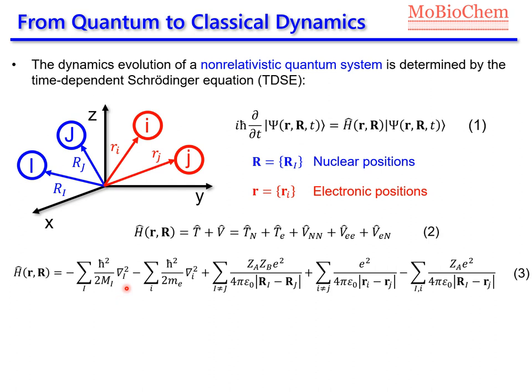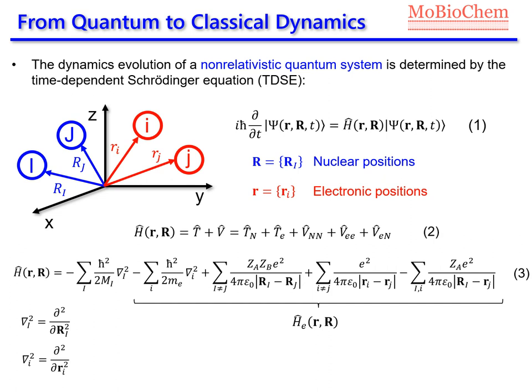If we develop each of the terms, we can write the Hamiltonian as equation 3, where the first term represents the kinetic energy of nuclei: minus the square of the reduced Planck constant over 2 and the mass of atom i, multiplied by the square of the Laplacian. The Laplacian is the derivative with respect to the nuclear coordinates for the first term, or with respect to the electron coordinates for the second term, which represents the kinetic energy of electrons. Then we have the nuclear repulsion as the third term, the electron repulsion, and finally the interaction between electrons and nuclei.